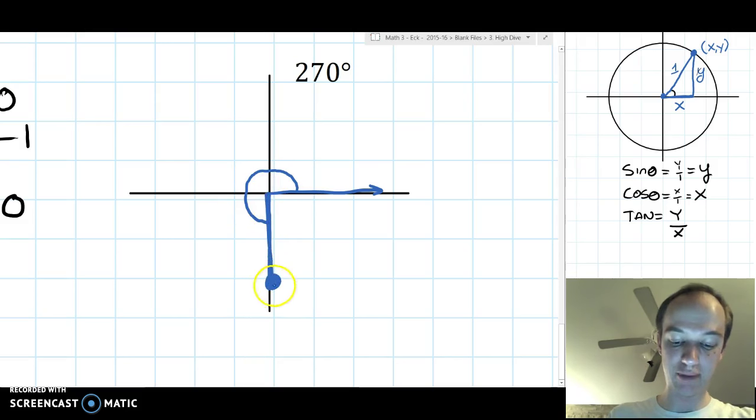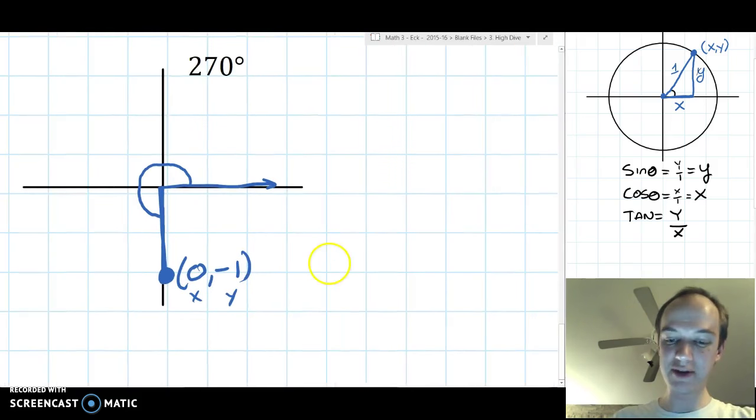We'll pick a point on the negative y. We'll call that point 0 comma negative 1, x comma y. Then, again, we're using the formulas on this side. These are the formulas that govern all of this.